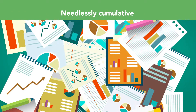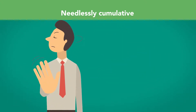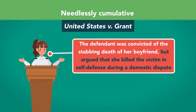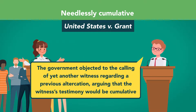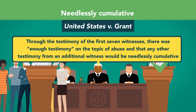Relevant evidence may be excluded if it is needlessly cumulative. If evidence or the other party's stipulation has already conclusively proven a fact in question, further evidence of the same fact may be excluded — evidence law's answer to the adage, enough is enough. In United States v. Grant, the defendant was convicted of the stabbing death of her boyfriend but argued self-defense during a domestic dispute. Grant testified and called seven other witnesses to discuss her boyfriend's prior violent and threatening actions. The government objected to calling yet another witness regarding a previous altercation, arguing that the testimony would be cumulative. The district court sustained the objection, reasoning that there was already enough testimony on the topic of abuse and any additional witnesses would be needlessly cumulative.